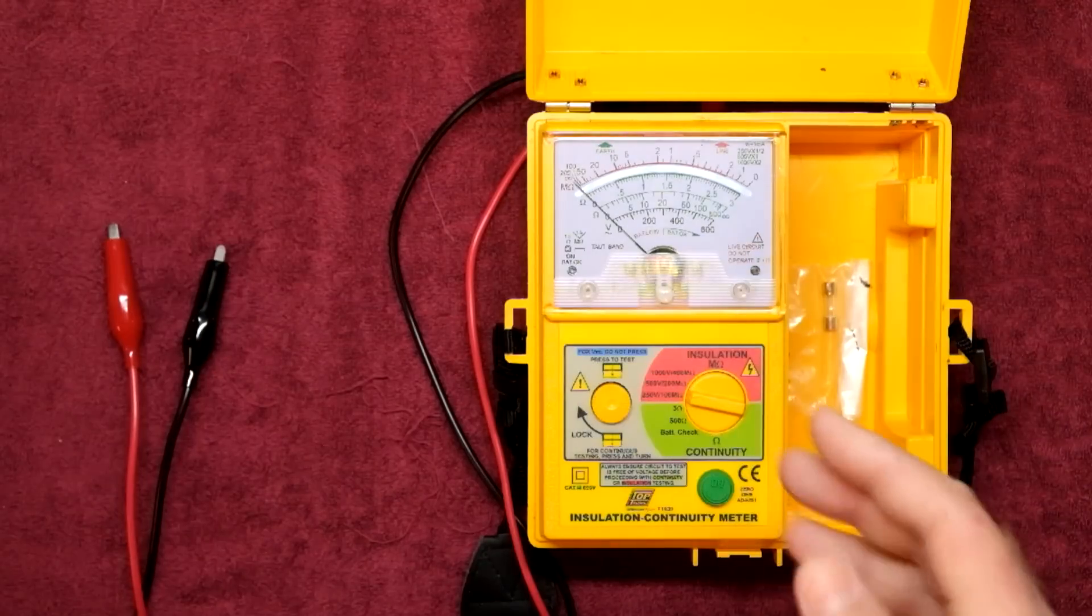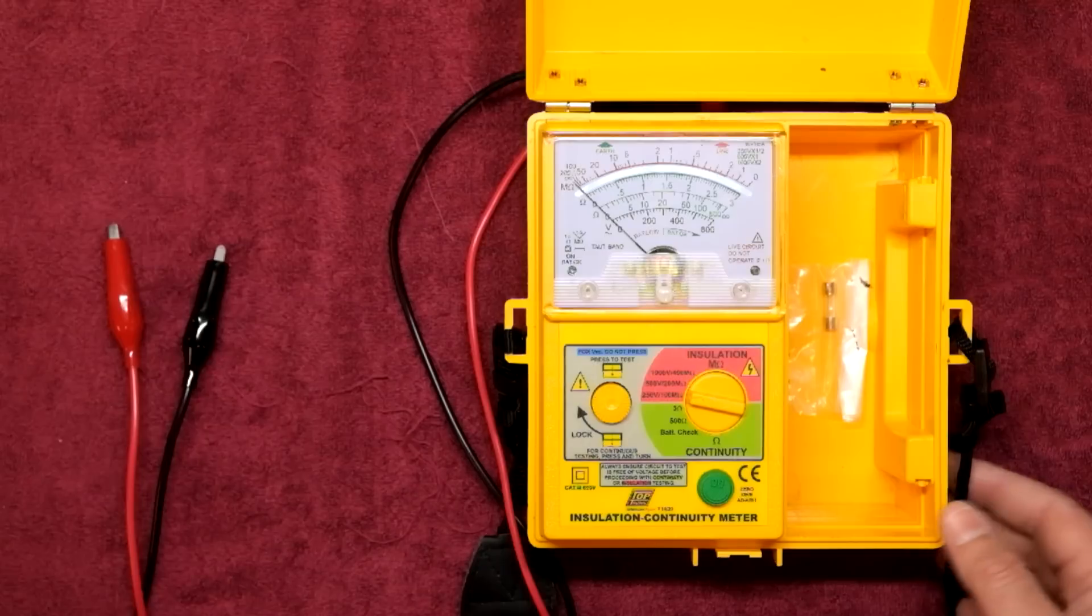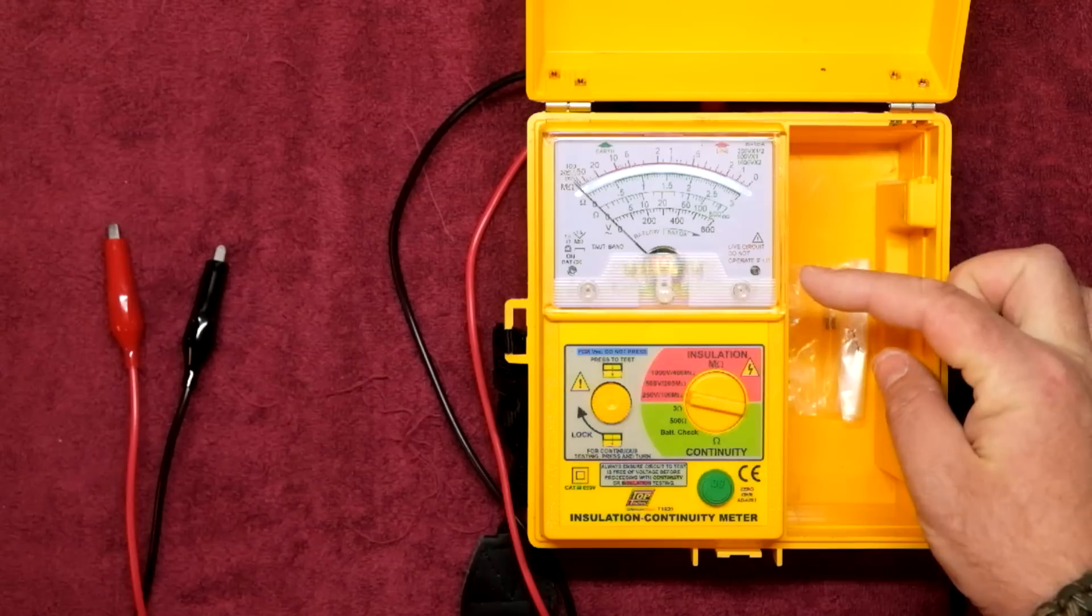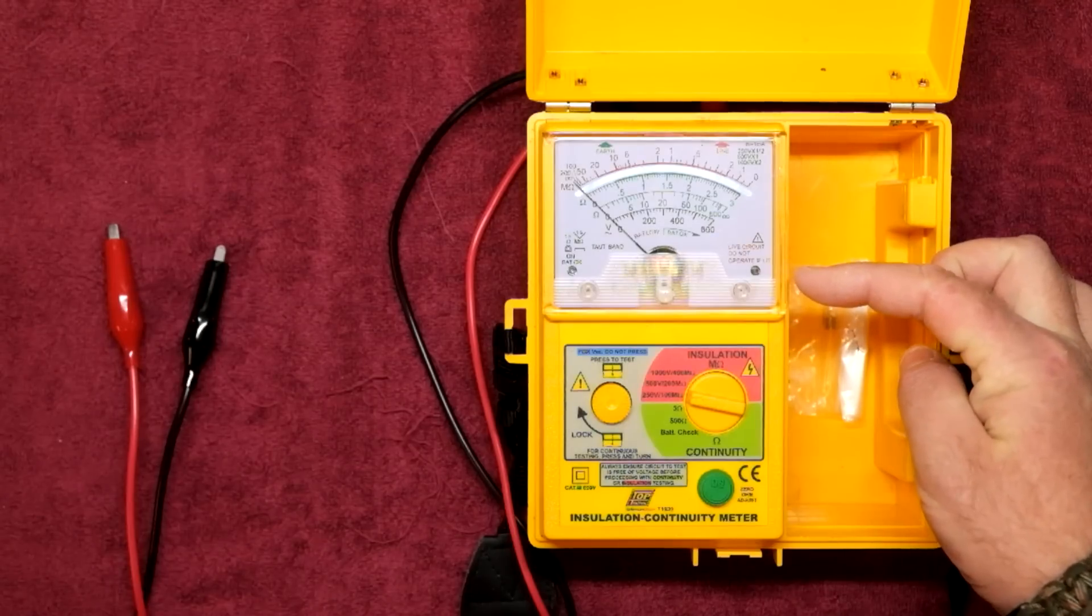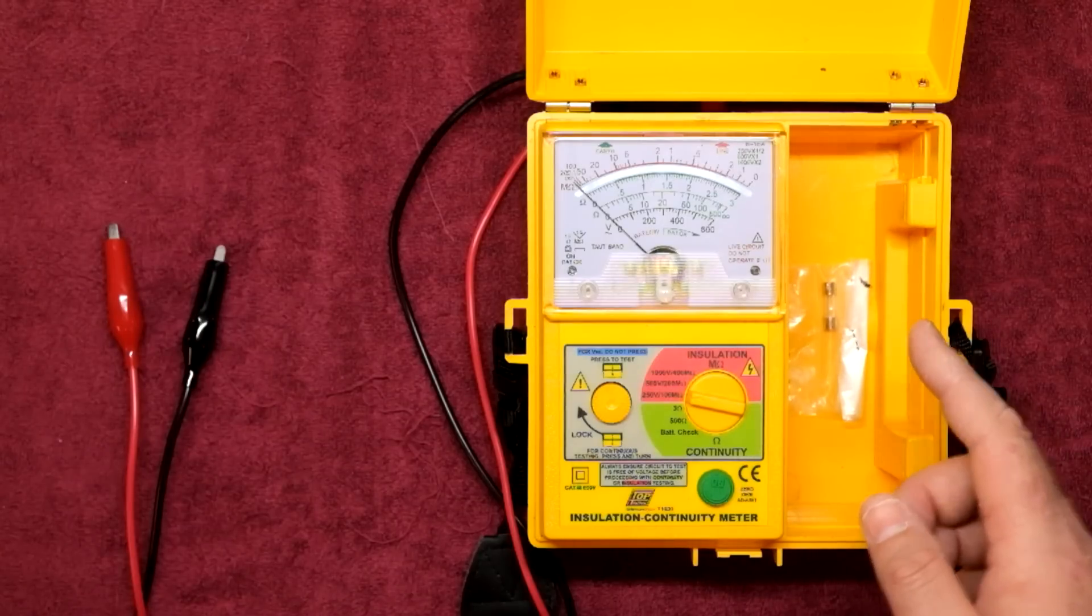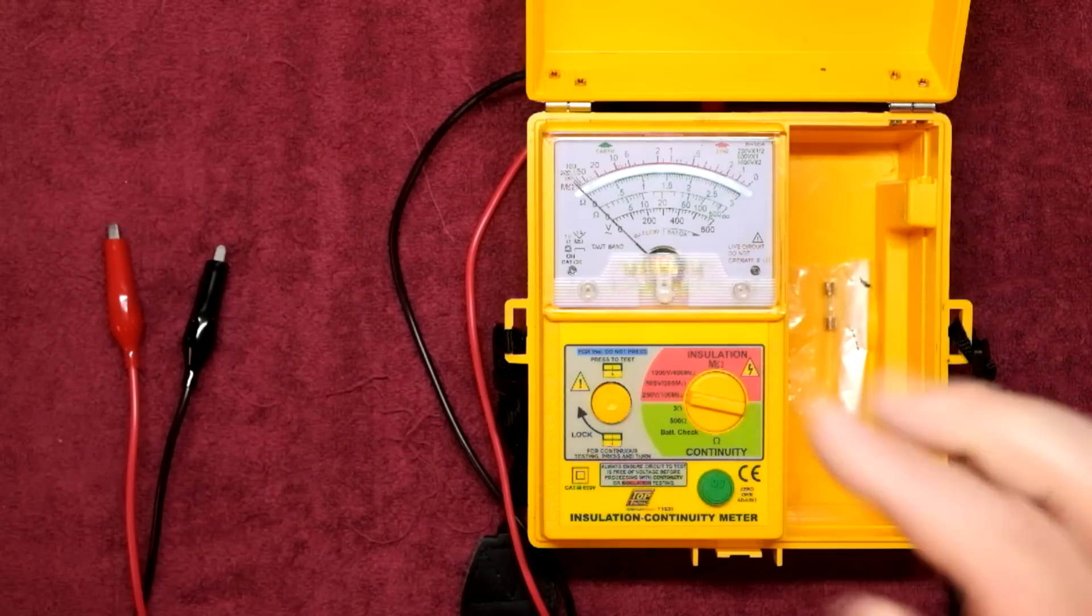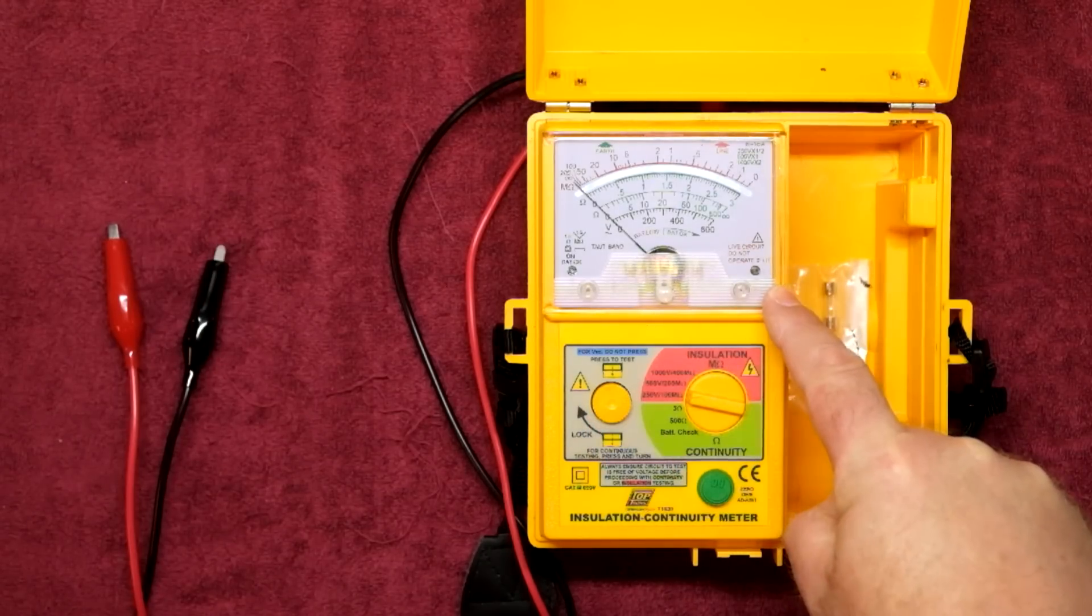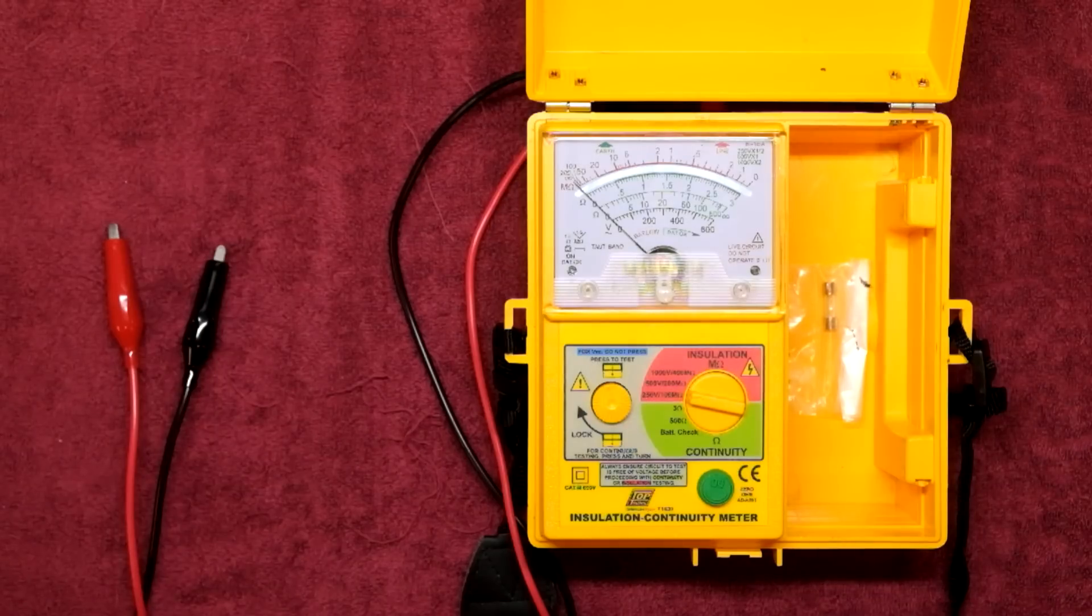And this has to be done on a dead circuit. So you must make sure that the power is off on the circuit before you go and do this. Otherwise you could be damaging some things. This meter does give you a warning: live circuit do not operate if lit. So if you happen to connect up it's going to give you a voltage reading and it's going to warn you not to push the test button. If you push the test button and it's live, you are going to damage the meter. Just keep that in mind. This is a common failure point with these sort of things. So yeah, there's not much else to be said for insulation resistance testing. I'm going to show you how useful it is for testing appliances next.